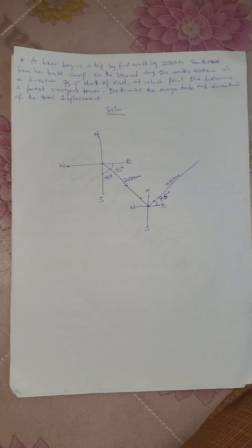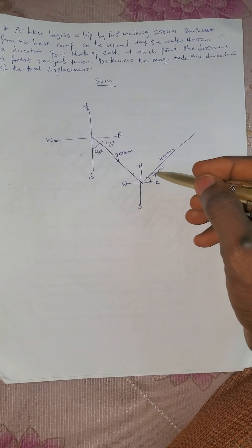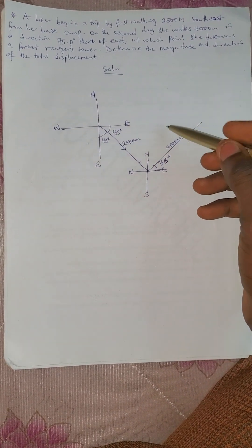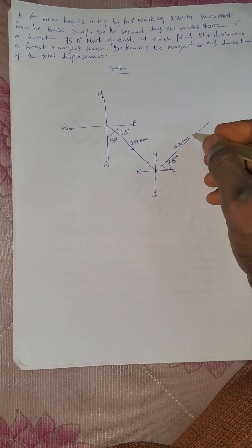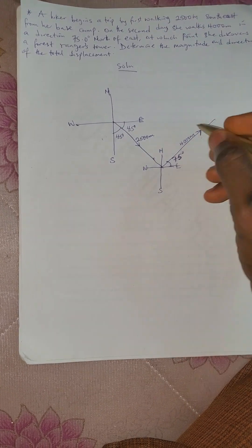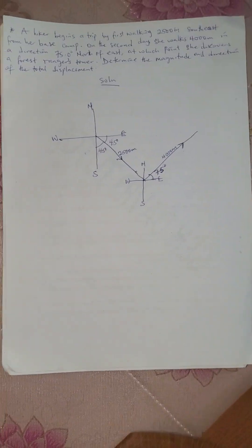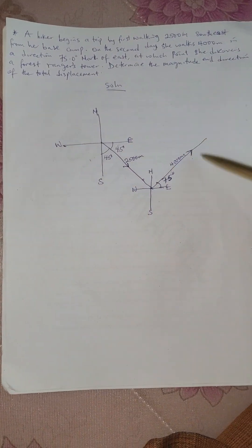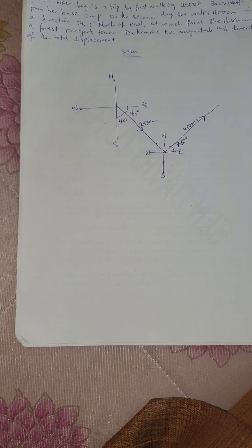Now it walks 75 knots east, so we have it to be not obvious here. The distance it works is 4000 meters, so that means it's going towards this but it's coming 2500 towards this side. At this point it discovers a forest. Now the question asks us to calculate the magnitude and direction of the total displacement.